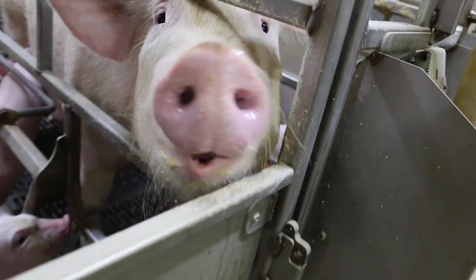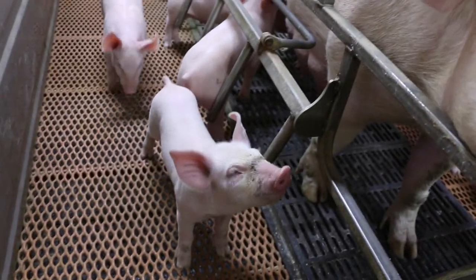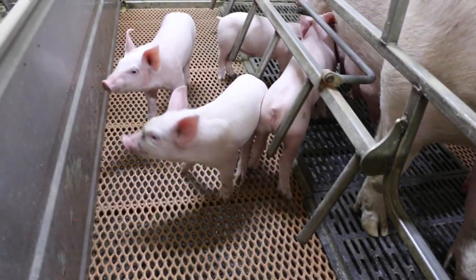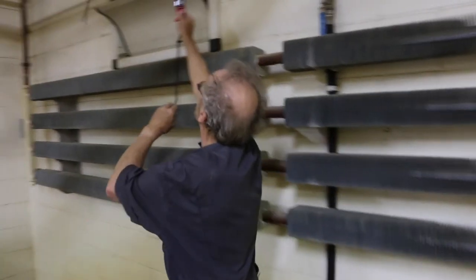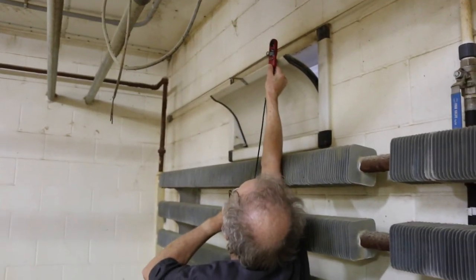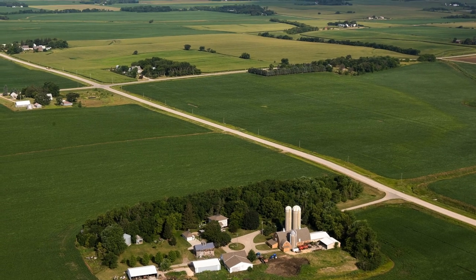Animals raised in controlled and comfortable environments are more likely to reach their maximum production potential. This helps farmers produce more milk, meat, and eggs more efficiently. That is why a ventilation system that is well designed and operated yields results that will pay off years down the road.